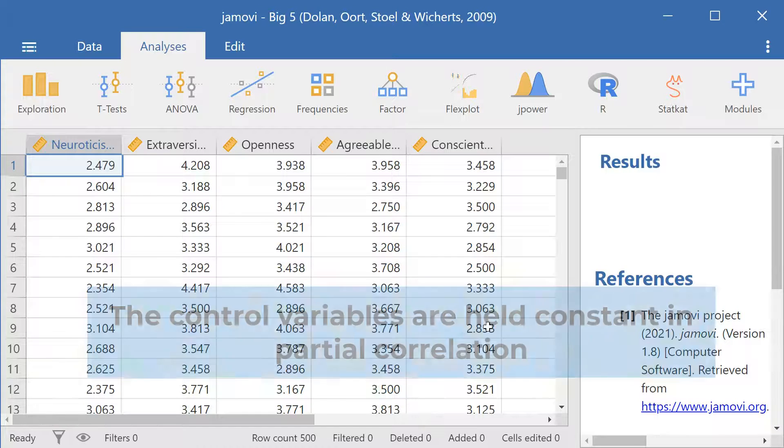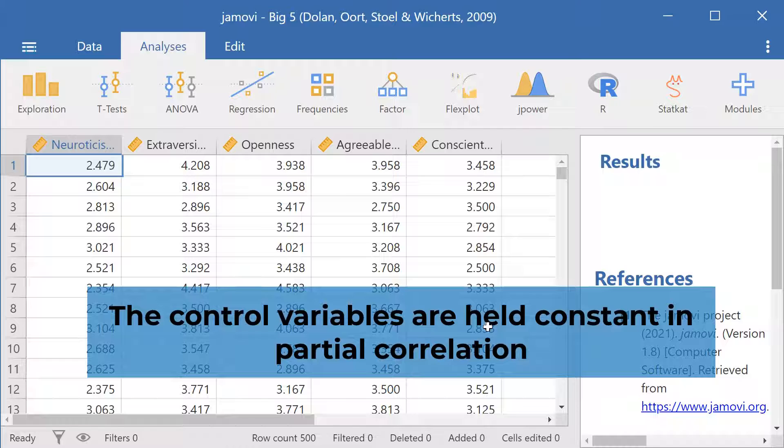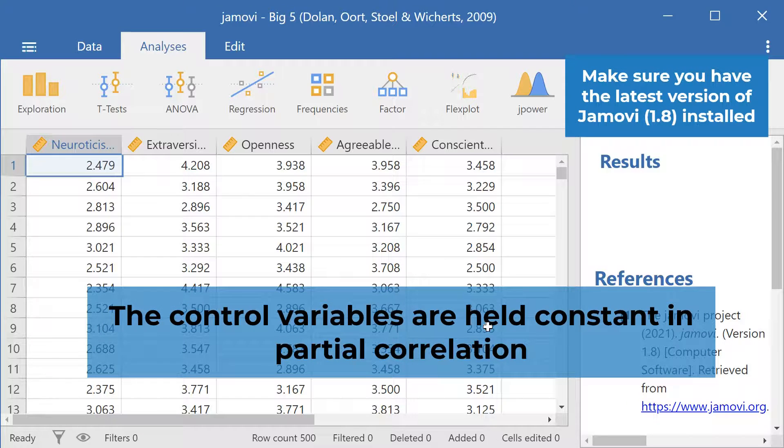And so with partial correlation, the control variable is held constant for the two variables of interest.